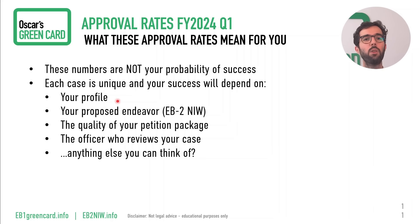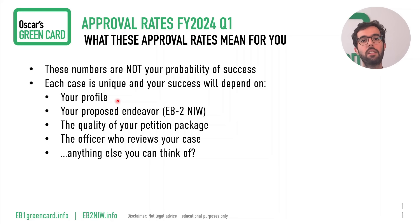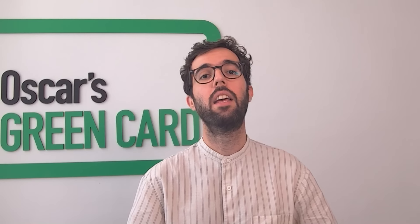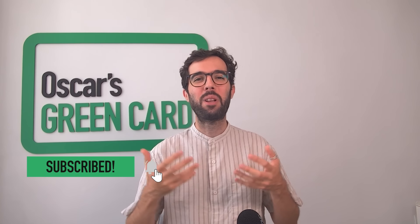External factors also matter — for example, who is the officer reviewing your case? Do you have any other ideas of what can play a role in the success of your case? Drop them in the comments below. If you're not sure whether you qualify, we have videos in this channel to guide you. I'll leave a link for a video on how to qualify for the EB2NIW category so you can evaluate your profile and understand if you're right for this category or if you need to do some profile building and keep working until you're able to put together a successful green card petition.